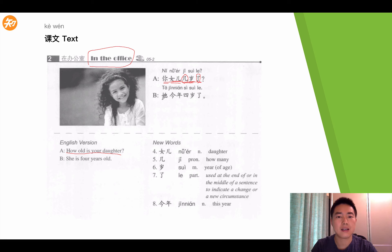Then B answered, 她今年四岁了。她 is she, the female, 她今年, this year, 四岁, four years old, 了 is the particle. So, B said, she is four years old this year actually. Okay, so, let's take a look at these new words.